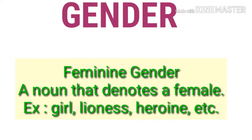The second kind is known as feminine gender. A noun that denotes a female is known as feminine gender. For example, girl, mother, sister, and daughter — these are known as feminine gender.